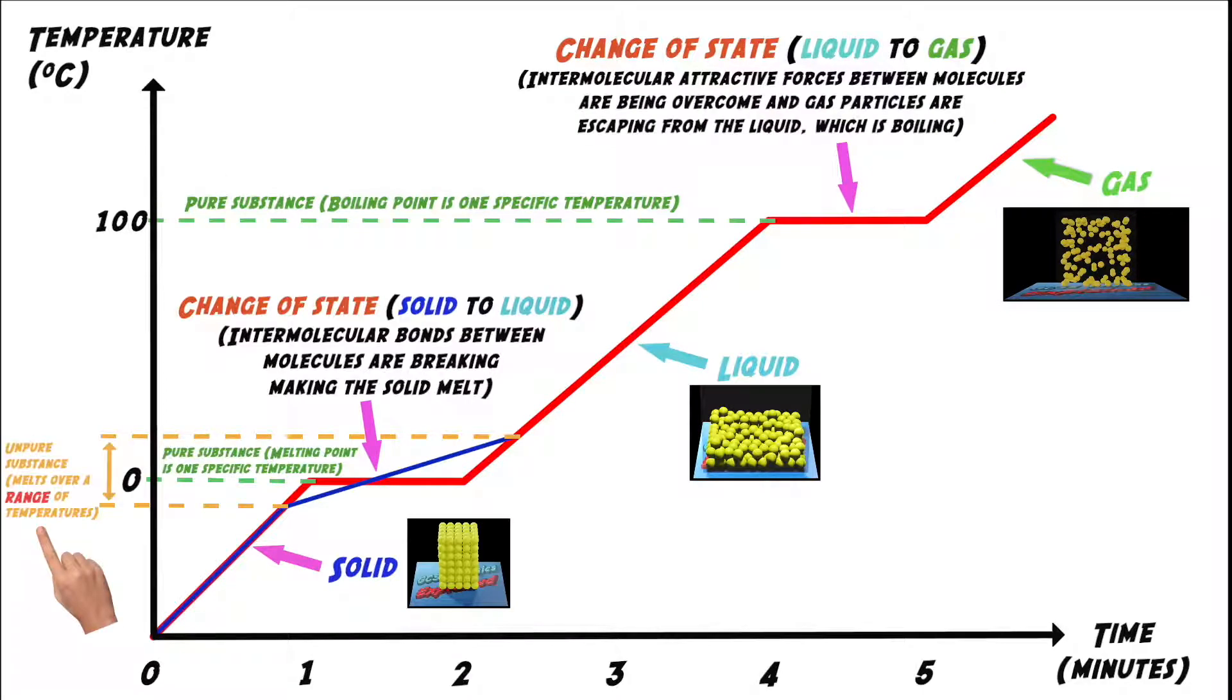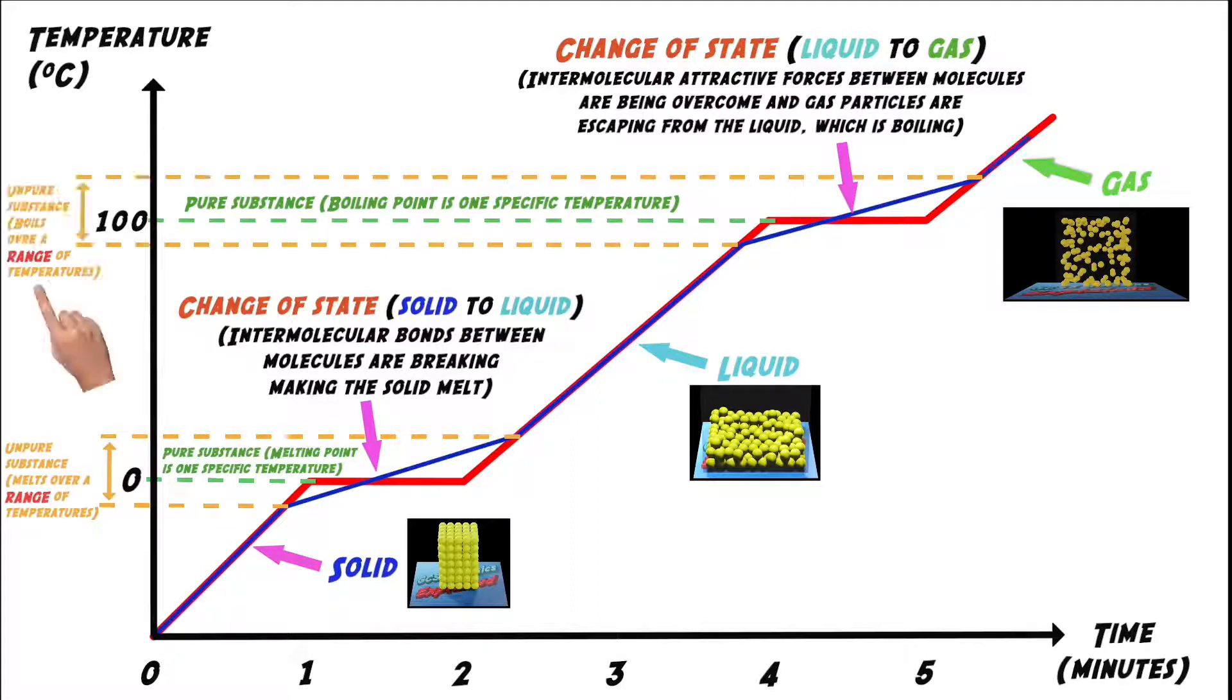Once all the intermolecular bonds have been broken, its temperature begins to rise if you continue to heat it. Let's see what happens as the unpure liquid starts to boil. Do you see how it boils over a range of temperatures? Once again, that's because the unpure liquid contains a number of different substances, each with different boiling points.